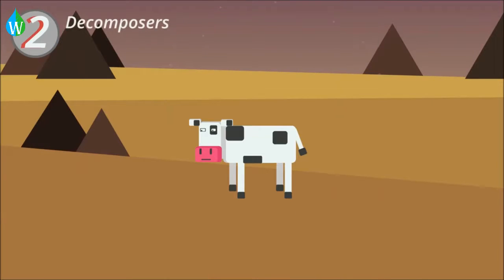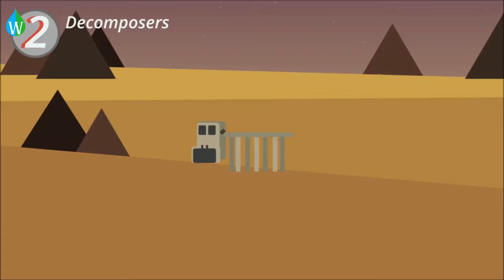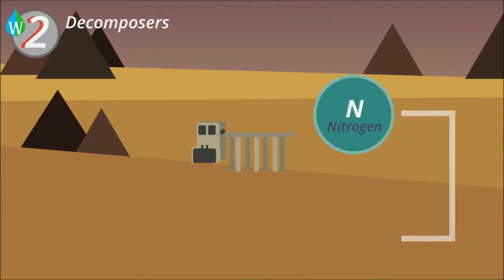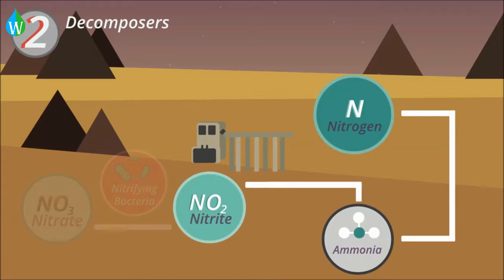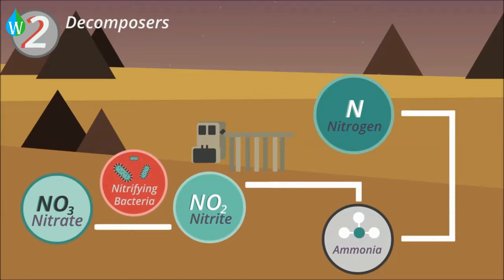Secondly, decomposers in the soils break down animal excretion and dead organisms, returning nitrogen back to the soil as ammonia. The ammonia turns firstly into nitrite, and then nitrifying bacteria in the soils turns the nitrite into nitrate.